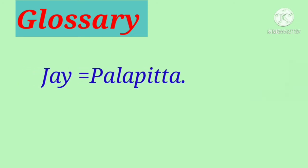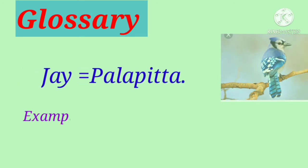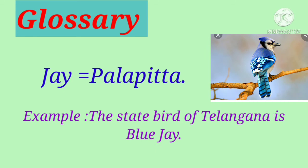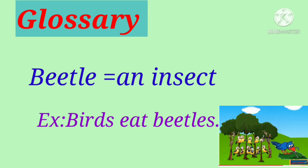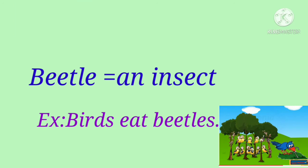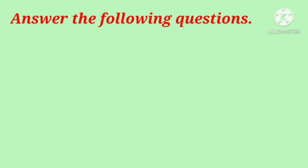Dear children, let's learn the vocabulary and their meanings. Jay — in Telugu, 'palapitta'. Example: The state bird of Telangana is blue jay. Beetle — an insect. Example: Birds eat beetles.